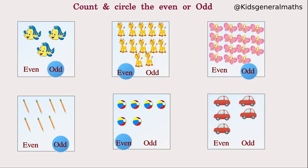Next we are going to count the crows: 1, 2, 3, 4, 5. How many? 5. Is 5 an even or odd number? 5 is an odd number — we circle 'odd'.